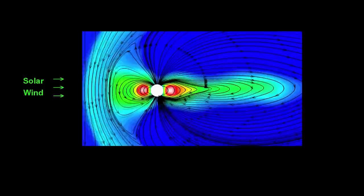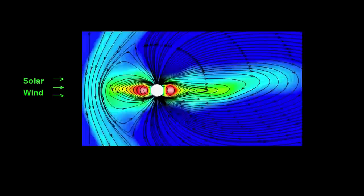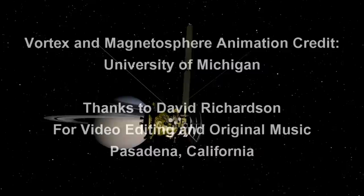This model is one proposed solution to a long-standing magnetic puzzle, and Cassini scientists will be watching to see how it holds up to continued observations of Saturn's magnetic field.